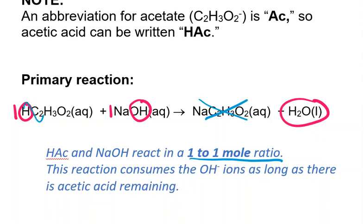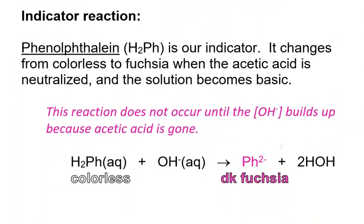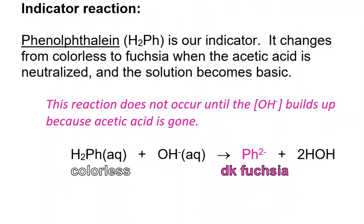Once all of the acetic acid is gone, then the hydroxide ions will react with the indicator. The hydrogen ions on the phenolphthalein are less likely to leave. And so this only starts to occur after the acetic acid is gone, but it's the same kind of reaction in that we have hydroxide will react with these to give you water. And then what's left, this ion that's left, is what gives us the color change. It's what turns dark fuchsia or bright pink.